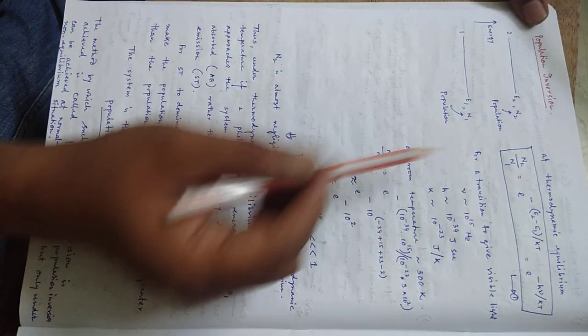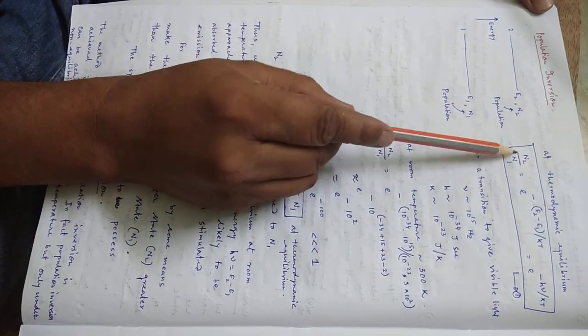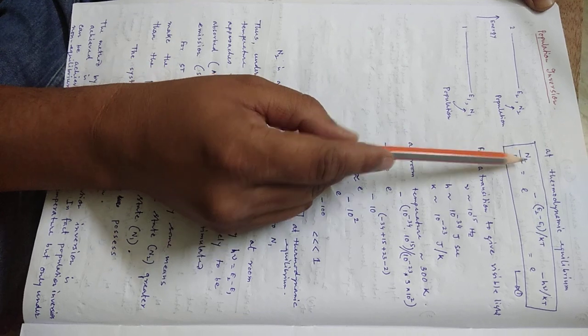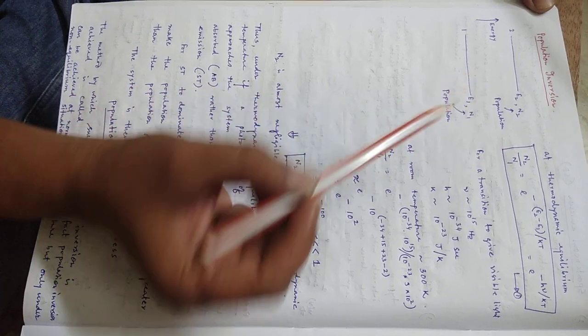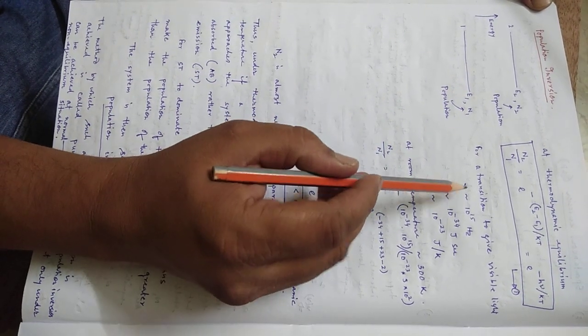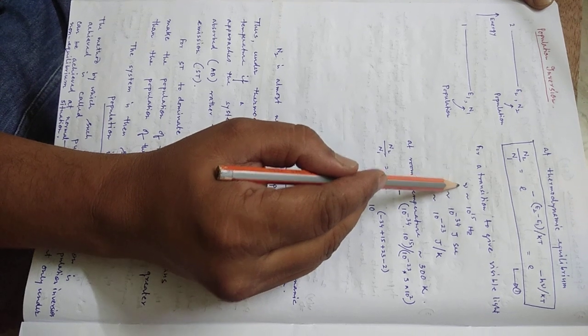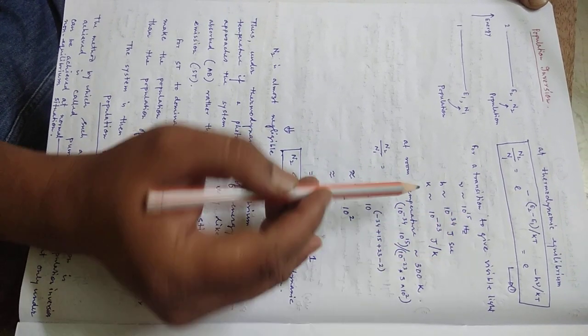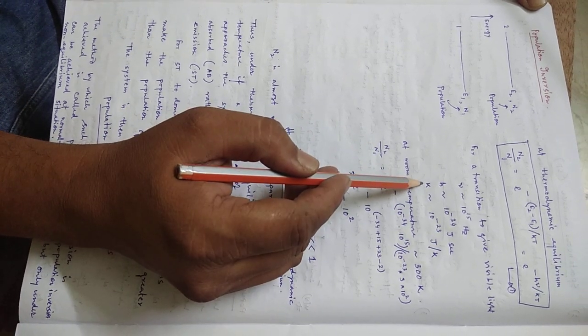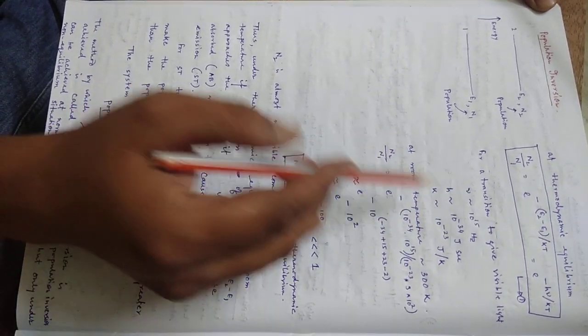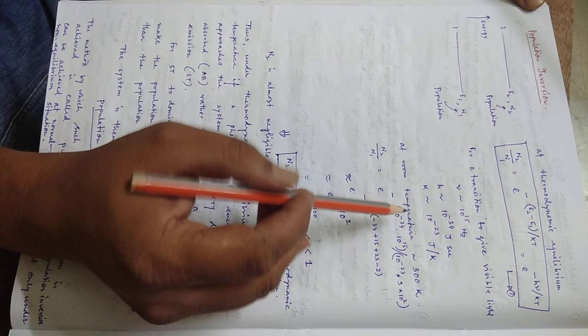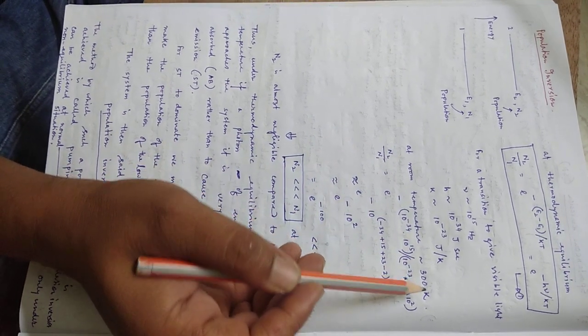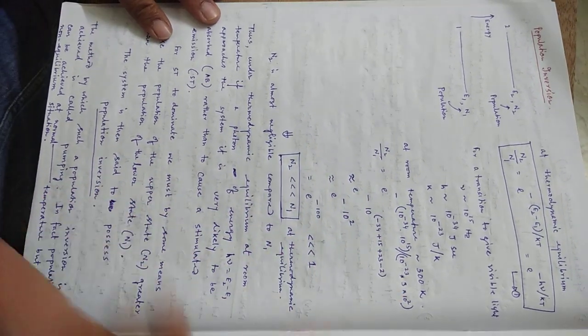Now, let us try to calculate what are these numbers, how does this ratio of N2 by N1 look like? If we consider a visible light emission, that means frequency of radiation is around 10 to the power 15 hertz, and the Planck constant and Boltzmann constant have their values, and if I assume the room temperature to be of the order of 100 Kelvin or 300 Kelvin,